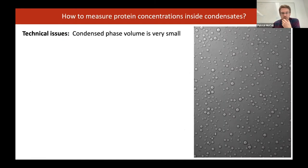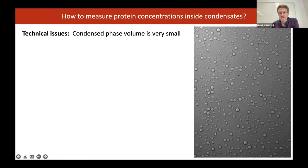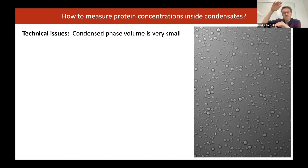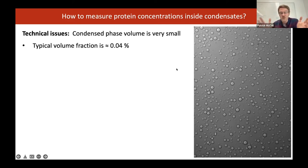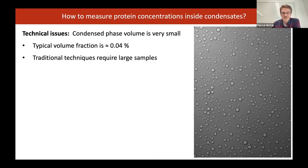We wanted to try to measure the condensed phase concentration. The problem was that this was actually very problematic for a technical reason. If you look at a bright field image of a bunch of droplets, you see the field of view covered with droplets. But the 100 microliters of solution above the cover glass is completely devoid of condensed phase. So the typical volume fraction of the sample volume made up of droplets is incredibly tiny — less than a tenth of a percent.